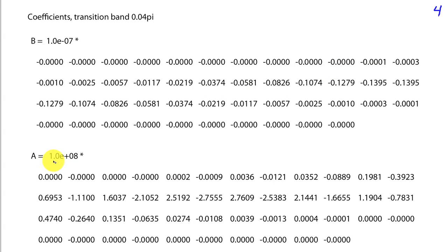And the same thing with the a coefficients. We know that this first one should be 1, but the range goes from 1 all the way to say 2 or 3 times 10 to the 8th. So there's a range of 10 to the 8th factor involved in the a coefficients.